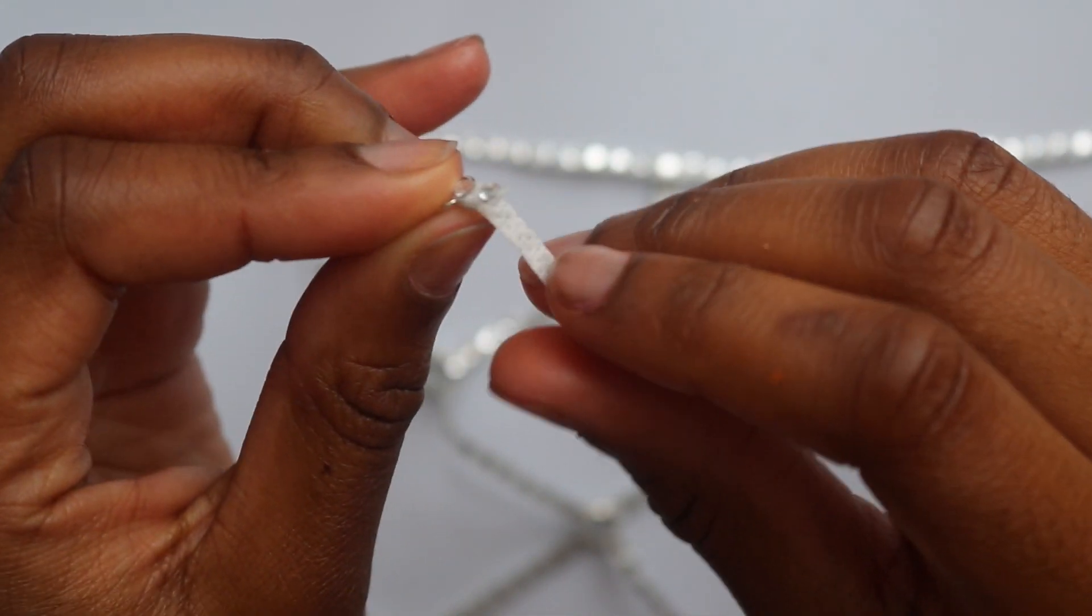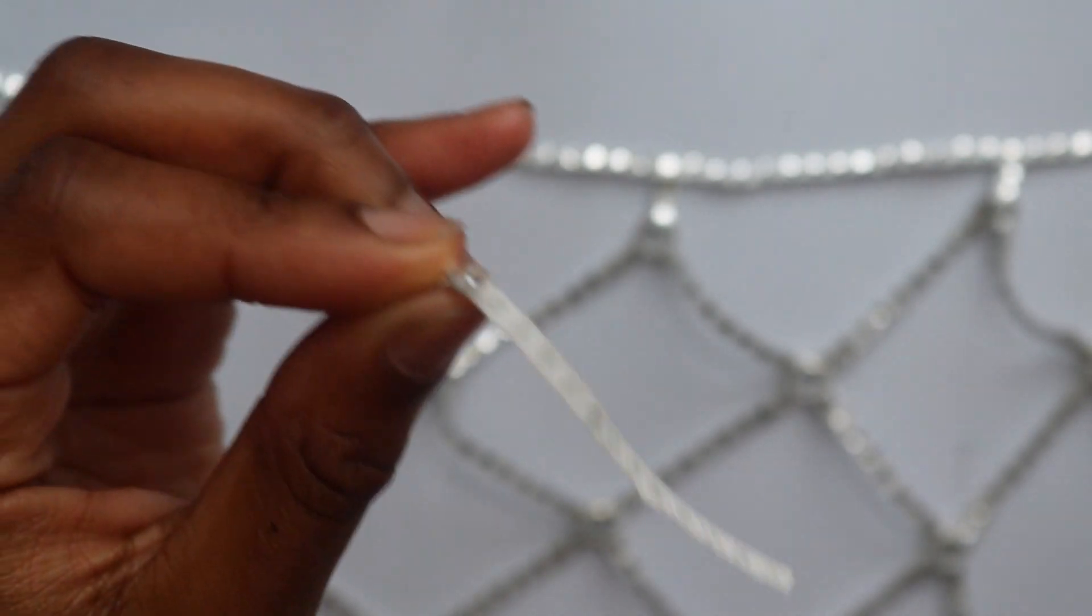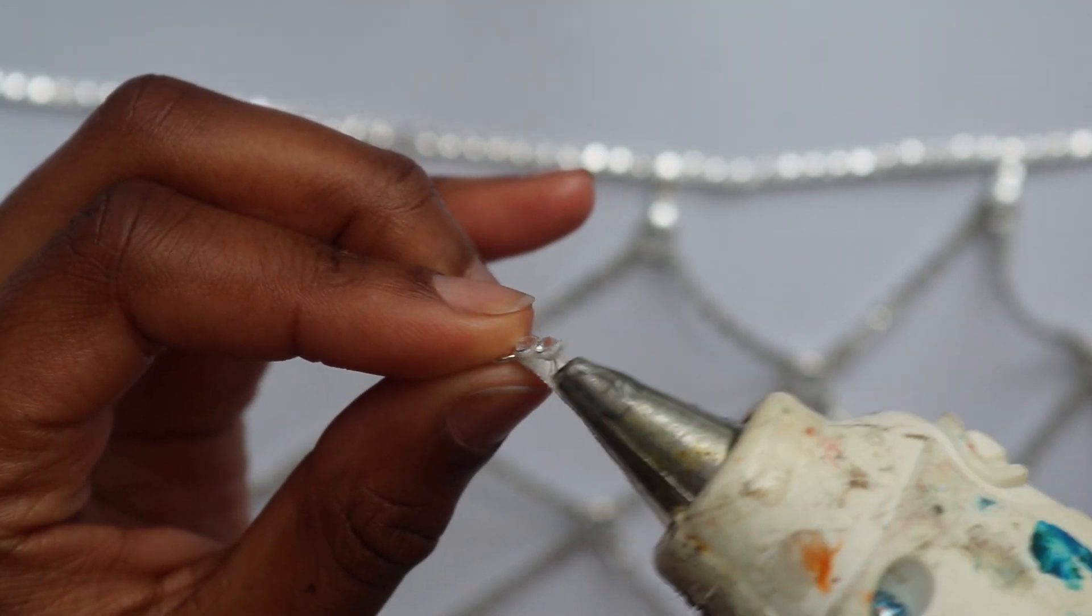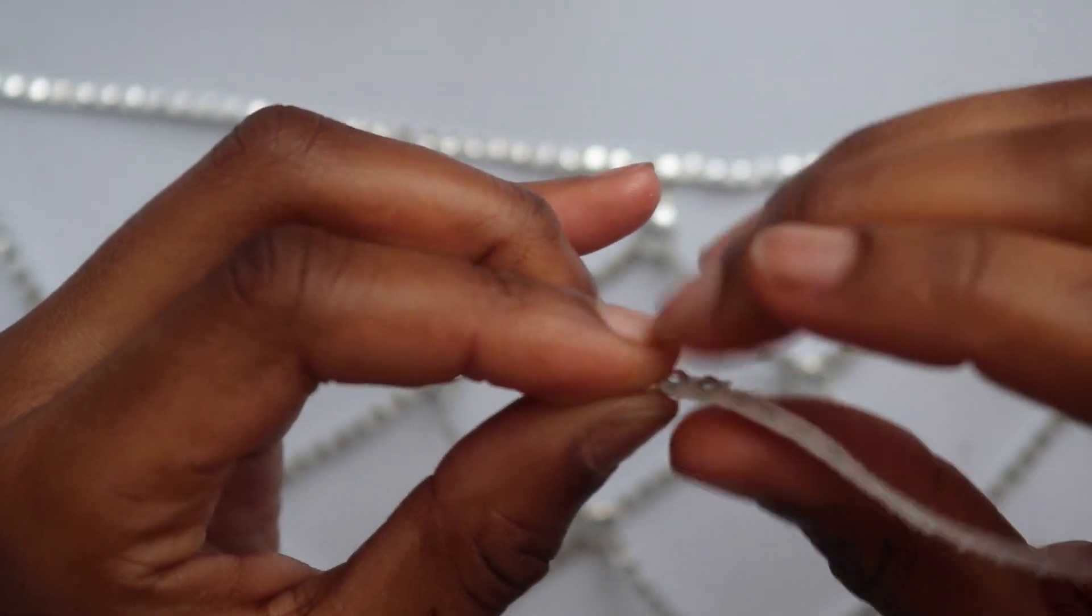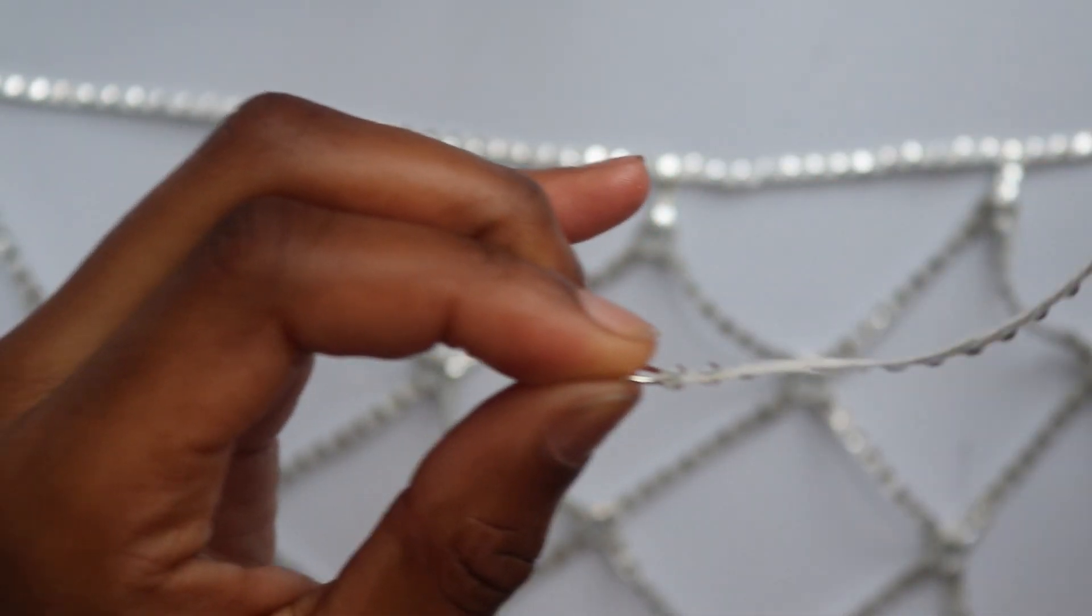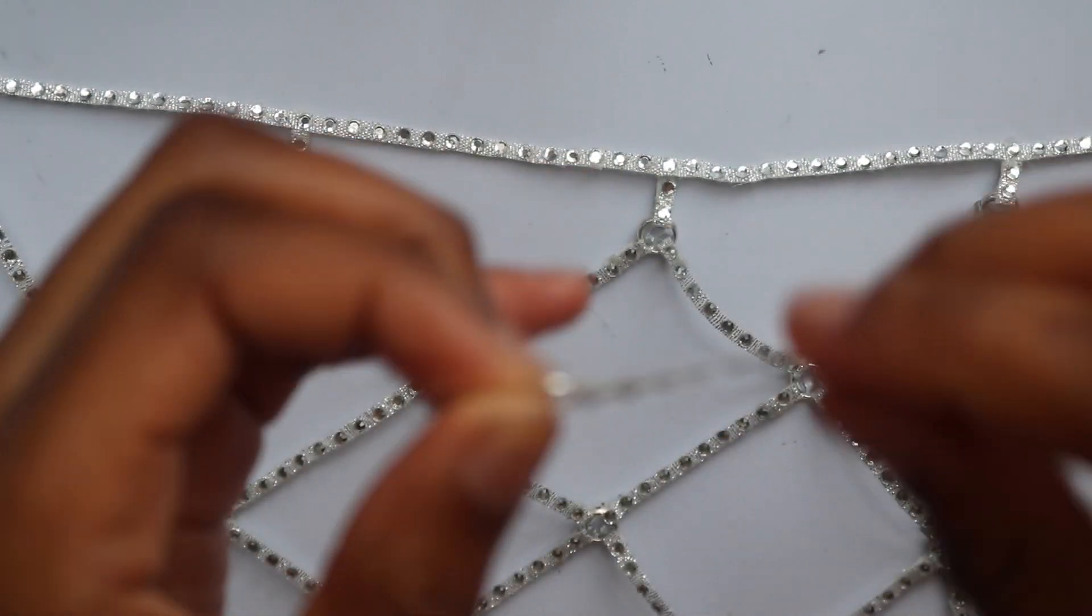Here I just took a jump ring and my one inch row of rhinestone and looped through two rhinestones, then took my hot glue gun and just glued it and pressed down.